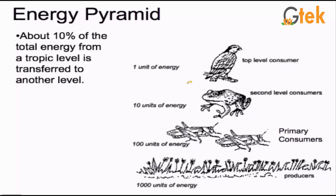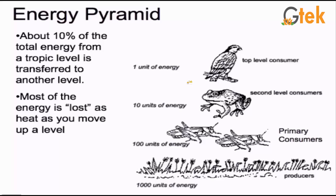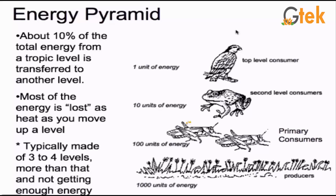So the energy transferred to the next level — most of the energy is lost as heat. From the bottom to the top level consumer, the energy is reduced. Typically a matter of three to four levels, as more than that the top level consumer is not getting enough energy — it contains only 1 unit of energy from the original 1000 units.